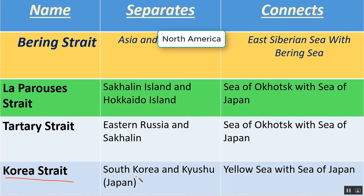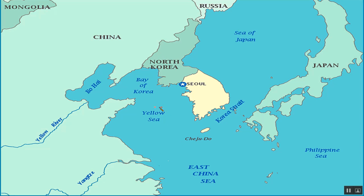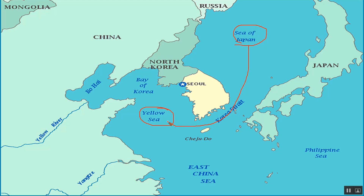Korea Strait separates South Korea from Kyushu of Japan, and connects the Yellow Sea with the Sea of Japan. Here on the map you can see the Korea Strait connecting these two water bodies and separating South Korea from Kyushu Island of Japan.